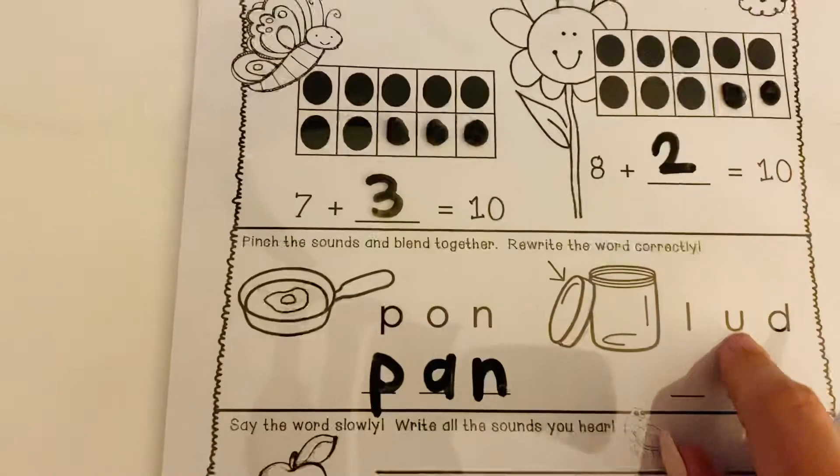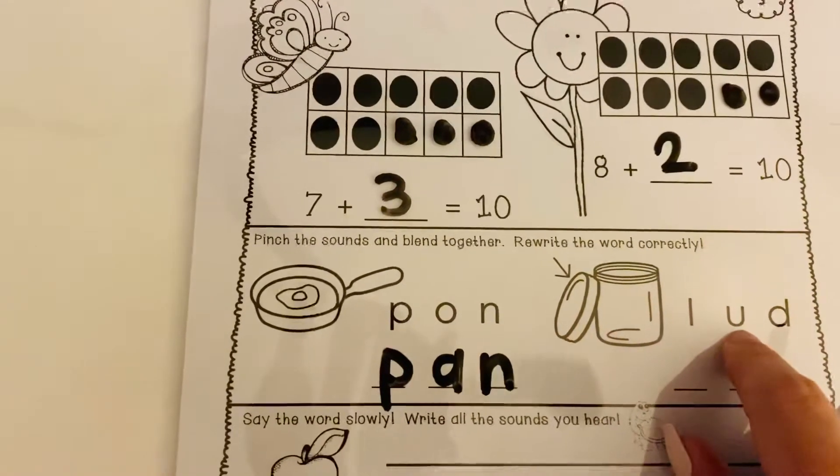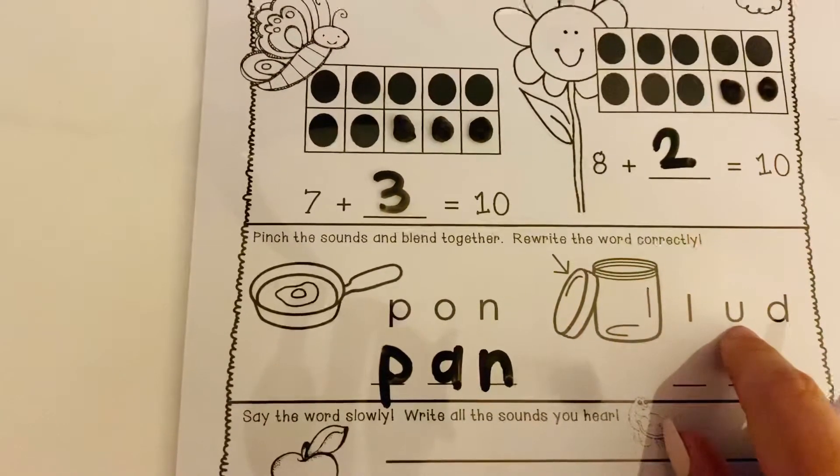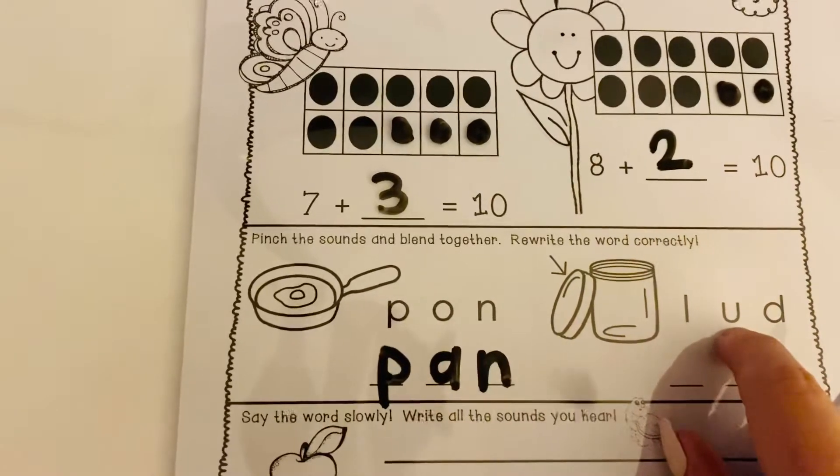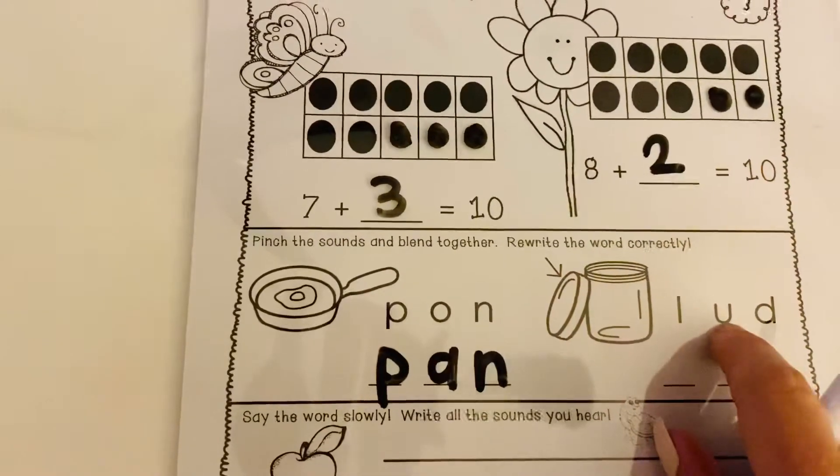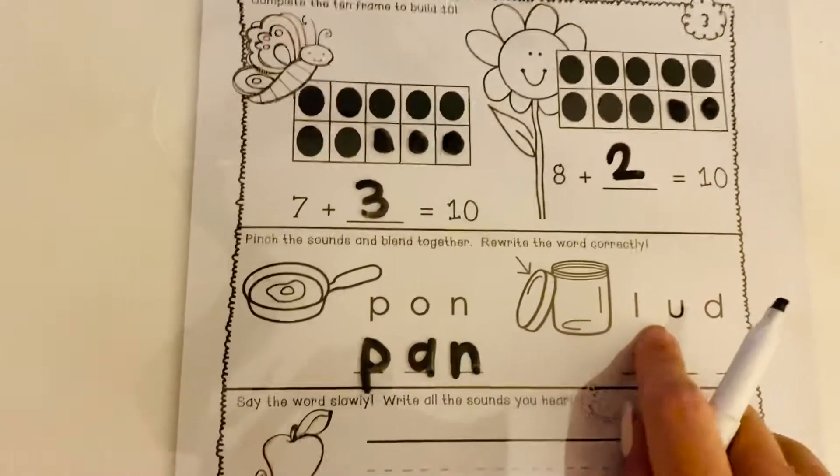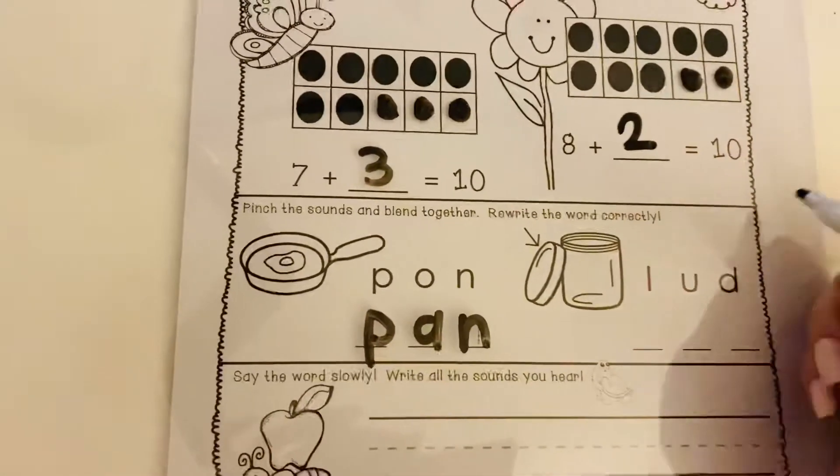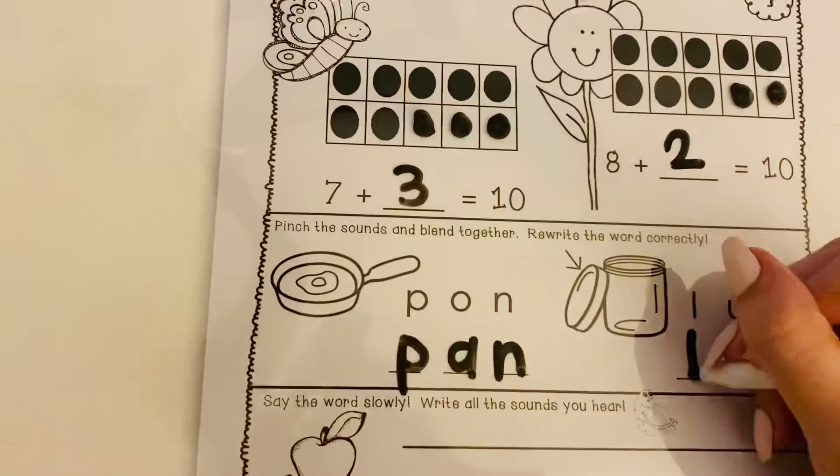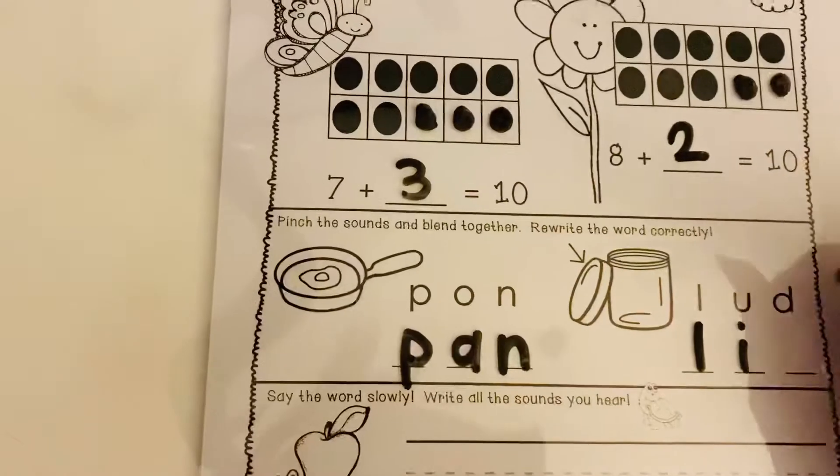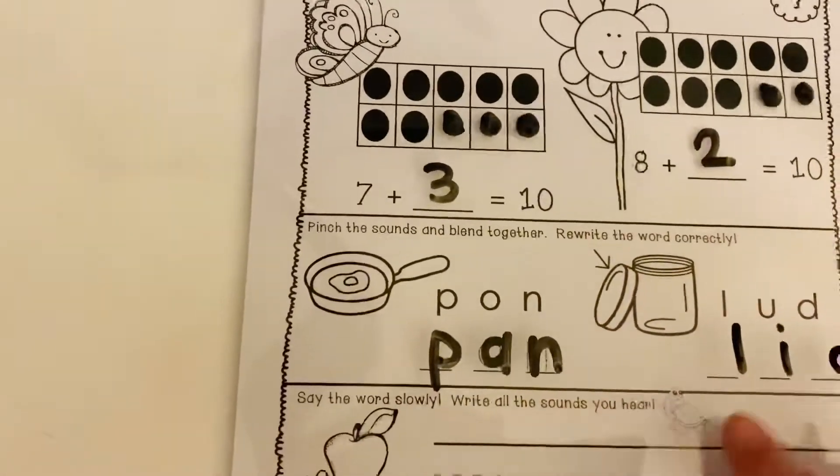So we want to change that middle sound from uh, uh to what? We want to change it to l-uh, i-uh, i-uh. I'm itching my nose. So that's going to be what says i, i says i. So we're going to go l-uh, i-uh, d-uh, lid.